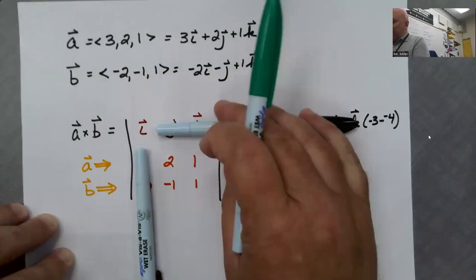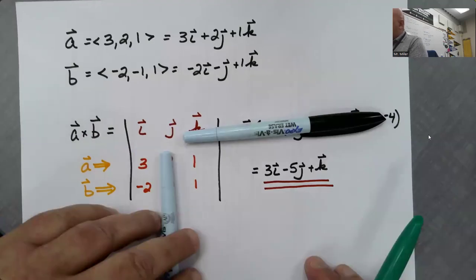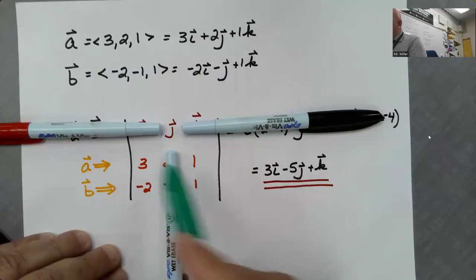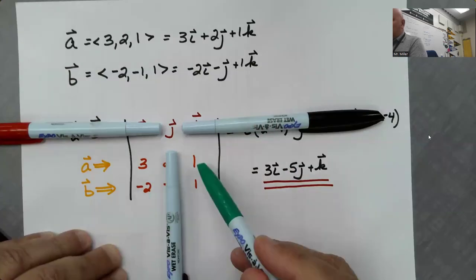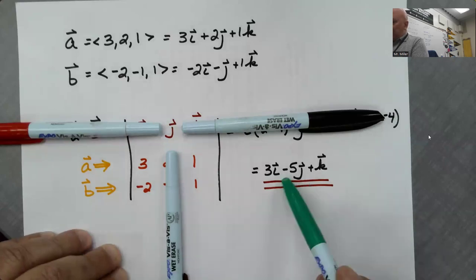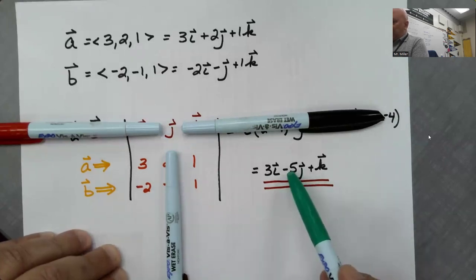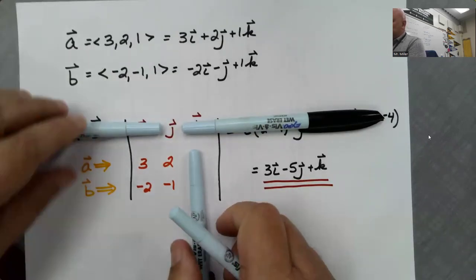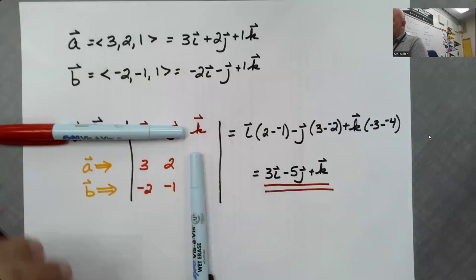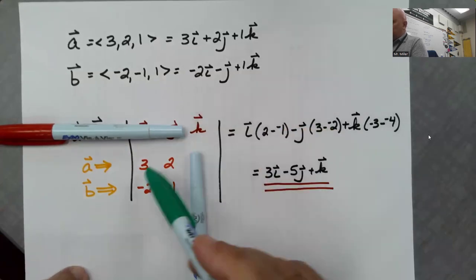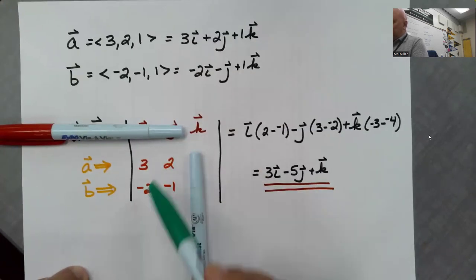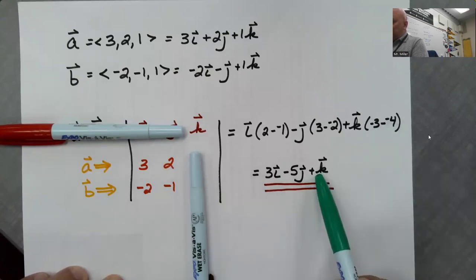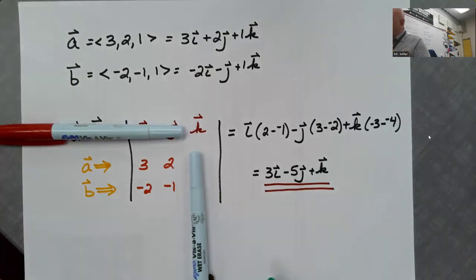And then, it's minus, down, minus, up. Three, minus, negative two is five. So, minus, five J. The negative comes from the plus, minus, plus. And then, it's going to be a plus, negative three, minus, negative four. Negative three, minus, negative four is positive one. So, plus K.